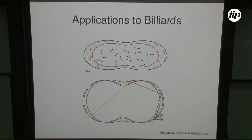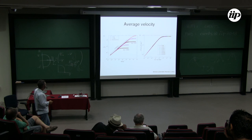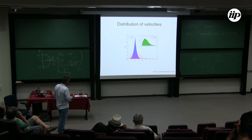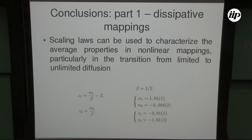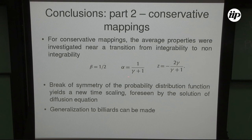All of these results can be generalized and applied to billiards — particles moving inside a confined region with a time-dependent boundary. The average velocity shows similar scaling behavior, curves collapse onto a single universal curve, and velocity distributions converge to a stationary state. Conclusions: for the dissipative mapping there are two scaling laws leading to universal exponents independent of nonlinearity or dissipation; for the area-preserving family, the exponents do depend on the parameter γ; and all results can be generalized to billiards. Thank you very much.